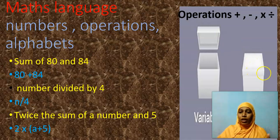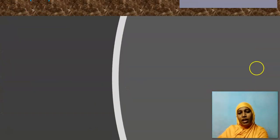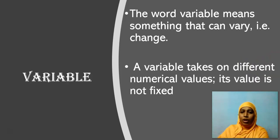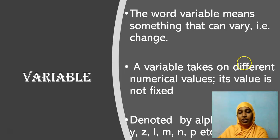See, but variables can vary, it changes. So I can define variable as: the word variable means something that can vary, that is, that can change. A variable takes on different numerical values. Its value is not fixed. And it is usually denoted by small letter alphabets: small x, small y, small z, small m.